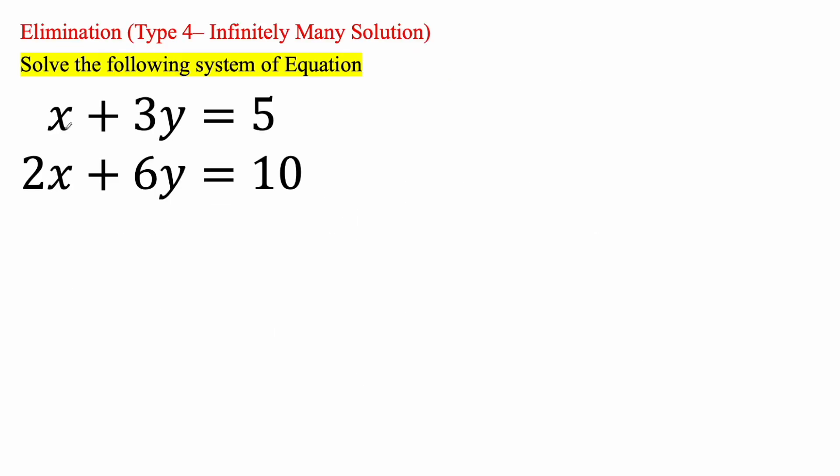Okay, this is 2x, this is positive x. So if we want to eliminate the x term, we can do that if we multiply this piece by negative 2. This piece will remain the same, so times 1.